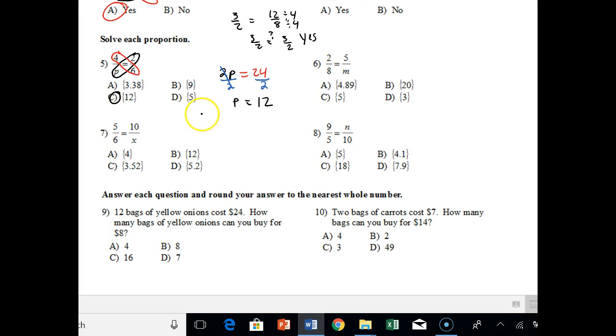So now you ask yourself, hey, is 4 over 12 the same thing as 2 over 6? Well, 2 over 6 simplifies to 1 third. And 4 over 12, hey, that also simplifies to 1 third. So yes, you have proportions.